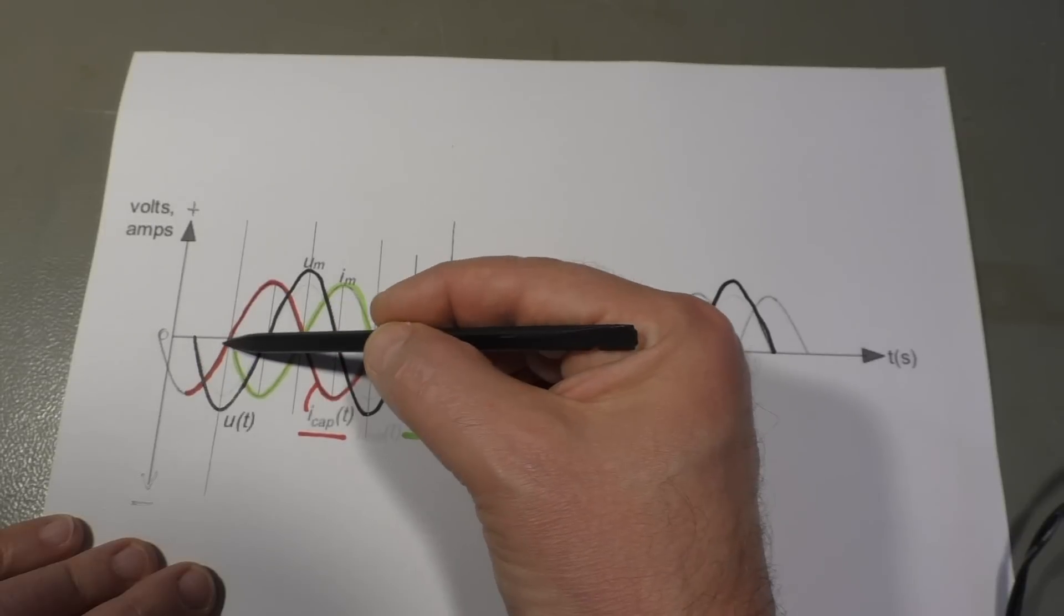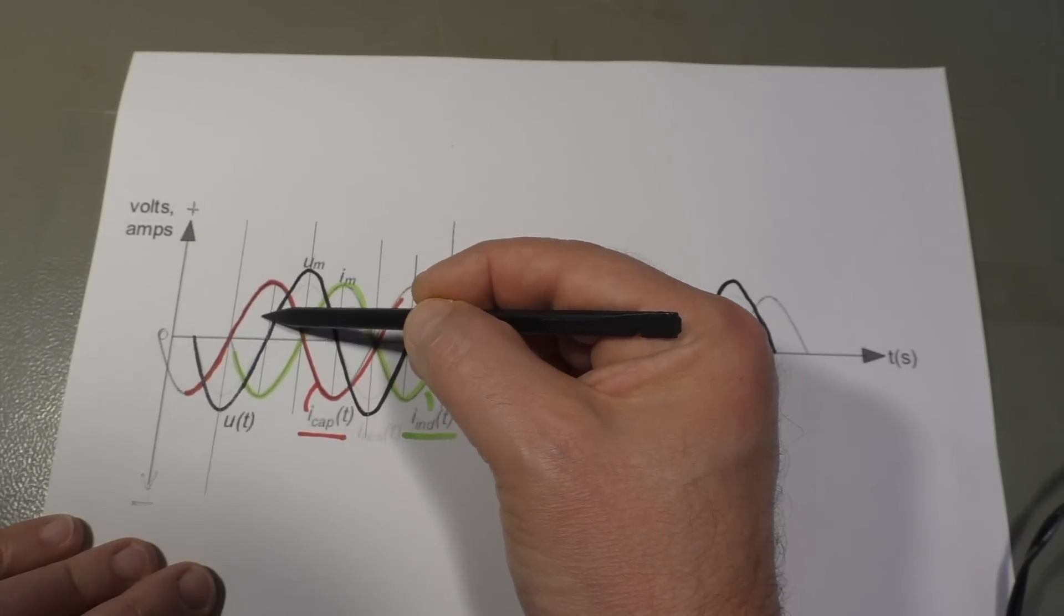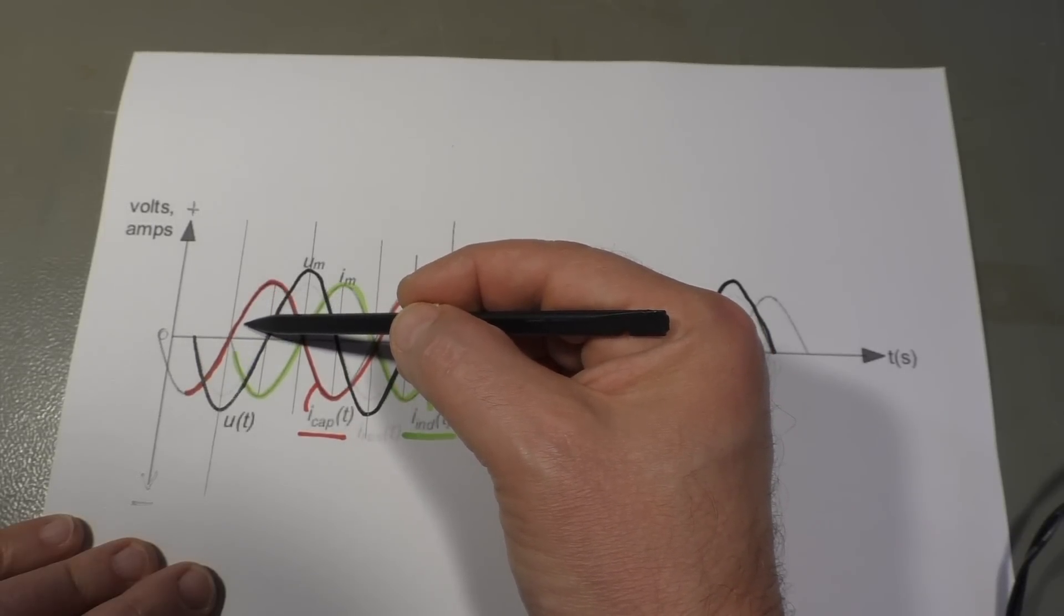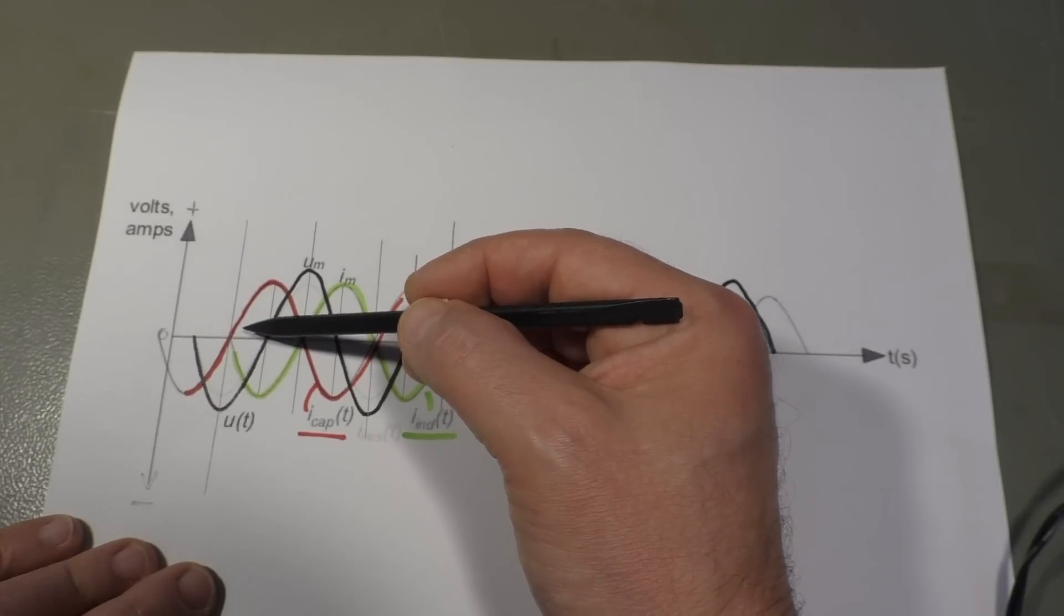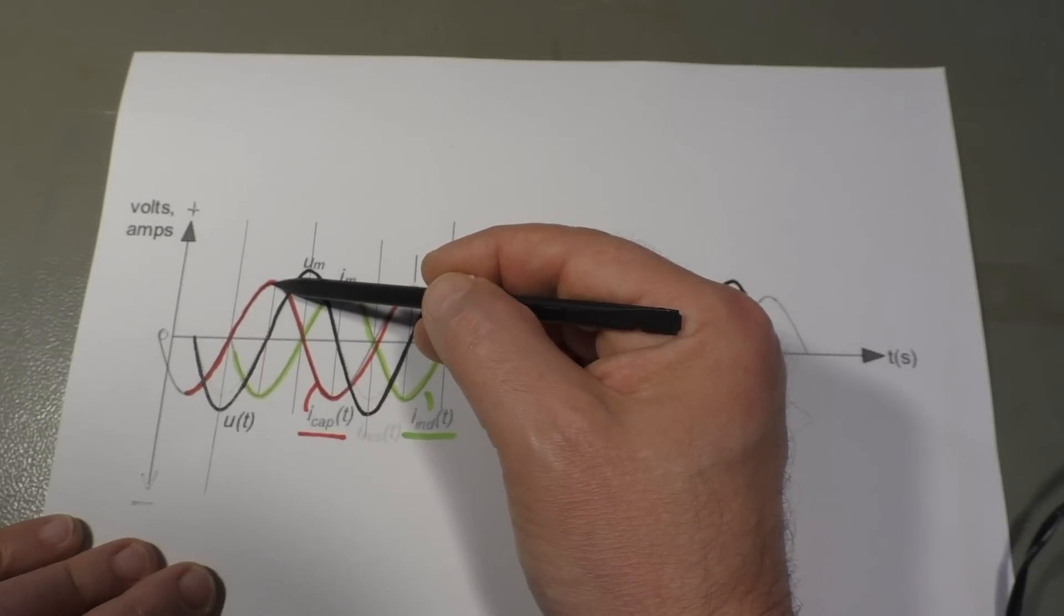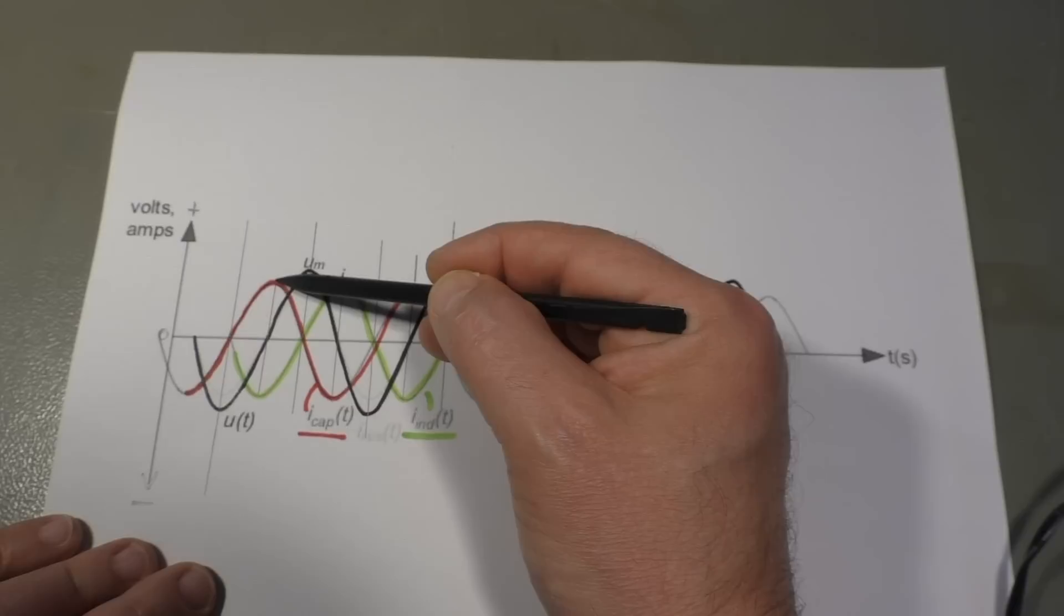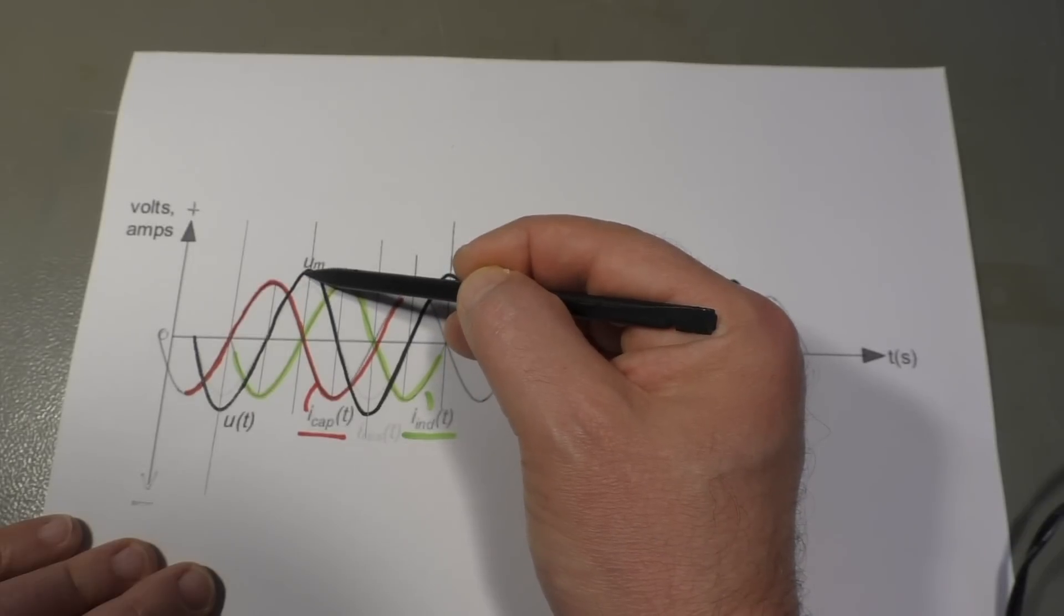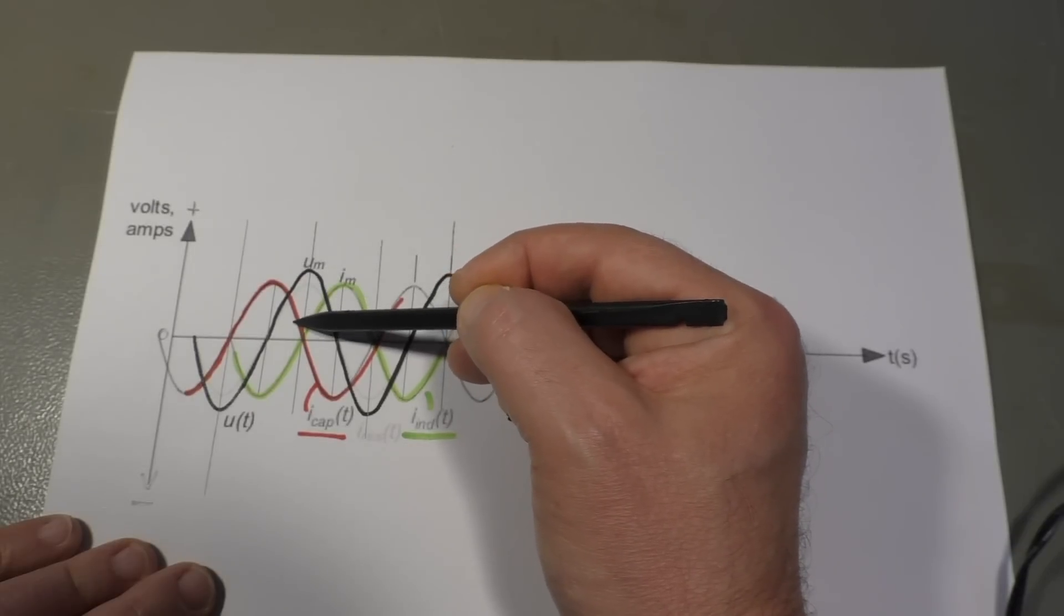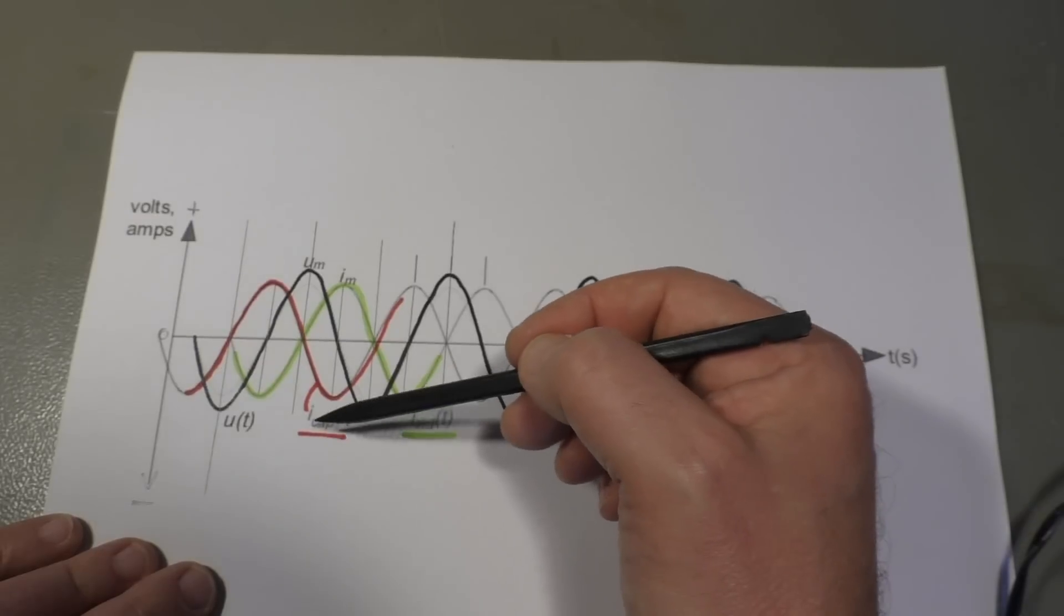The capacitor is empty, let's say here. It charges up very quickly because in the first moment it is empty and takes up most of the current. Then it gets full, saturated with electrons, and the current drops while the voltage is still rising.